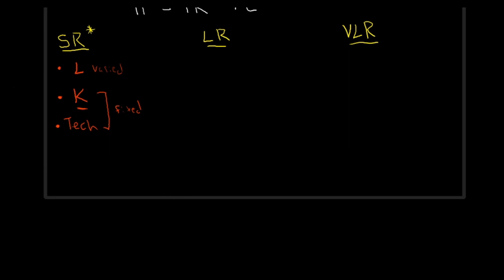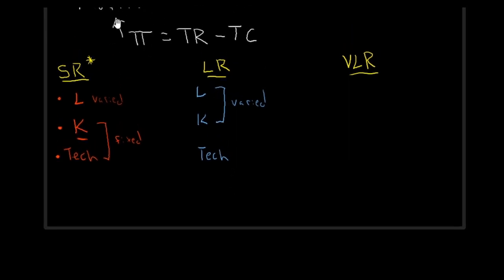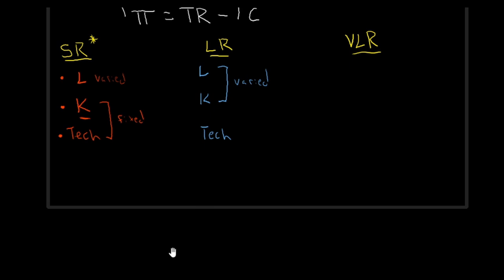In the long run, we can now choose both our labor and capital — both of these can be varied. We can find the perfect ratio between the amount of workers we need and the amount of capital we want, matched in order to maximize our profit. However, in the long run, our technology is still fixed; we are stuck with whatever our technological level is.